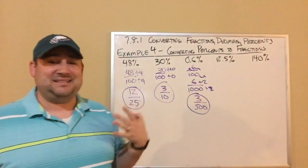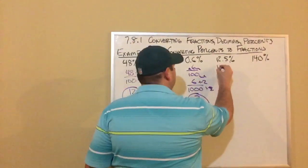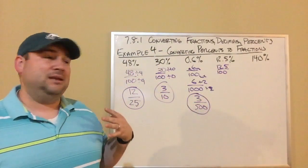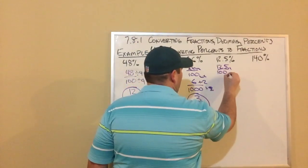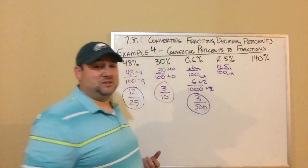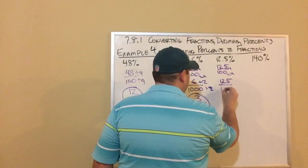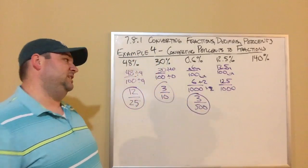So let's look at the next one: 12.5 percent. This is kind of the same idea as the 0.6 percent. I take that 12.5 and I put it over 100. I got the same problem where I have a decimal in the fraction. I got to move it over one. To move it over one, I have to do that in the denominator as well. So this becomes 125 over 1000.